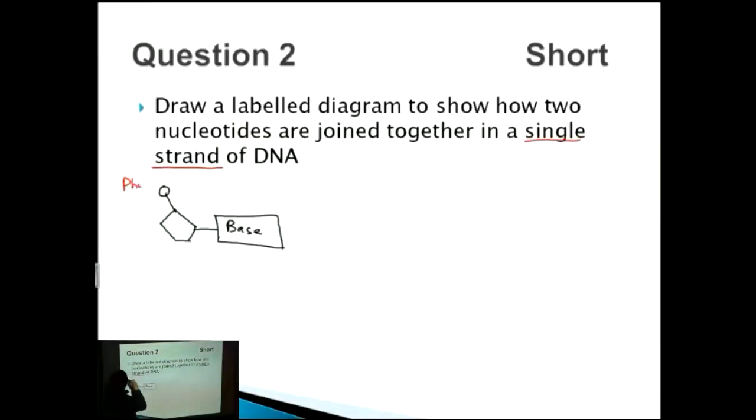So we've got phosphate, deoxyribose, and our base over here. Let's also throw in our hydrogen bond as well. Sorry, not hydrogen bond, covalent bond. Covalent bonds are between the nucleotides.